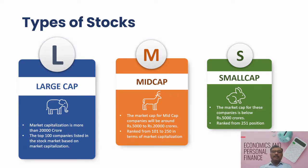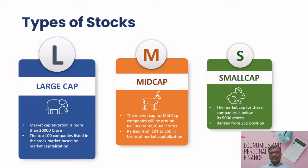The last category is small cap companies. These are stocks of companies which have the lowest market capitalization, below 5,000 crore. Small cap companies are often in their early stages of growth and may have significant growth potential. However, they also tend to be more volatile and carry higher risk compared to large cap and mid cap stocks. Investing in small cap stocks can be more speculative but may offer higher returns for investors willing to take on additional risk. You can consider them as a rabbit — small and capable of big leaps, but more vulnerable in the environment.